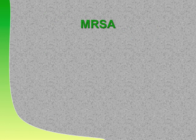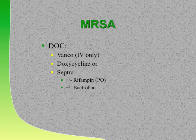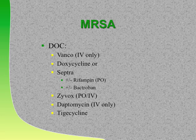MRSA drug of choice: for MRSA in the blood, use vancomycin. If it's just a boil and the patient has no money, doxycycline or Septra. So: vancomycin IV, or doxycycline/Septra for mild disease. You can combine with rifampin, which also helps decolonize. Bactroban ointment helps decolonize too. Zyvox kills MRSA. Daptomycin also works against MRSA. Tigacycline has activity but is not typically used for that indication.